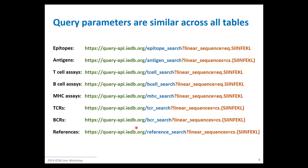Each of the search endpoints will have pretty much the same search fields within them. If a field name is pluralized, that indicates there's an array of those values. You can replicate the same query across all different search endpoints very easily using almost the same terms — just check whether a field is plural or singular to determine whether to use equals or contains.